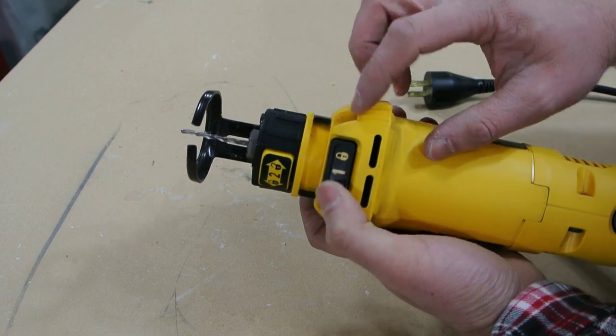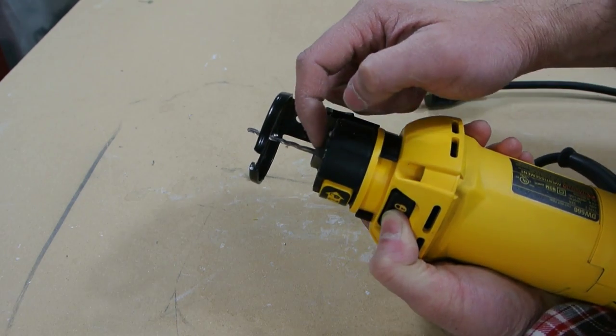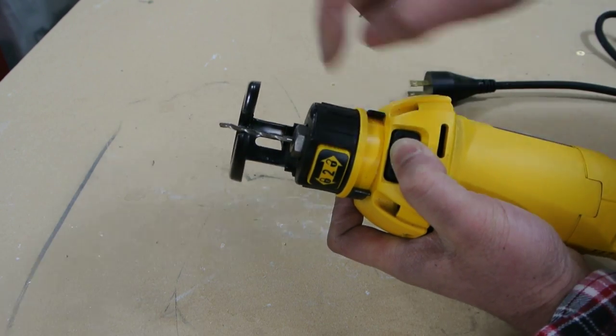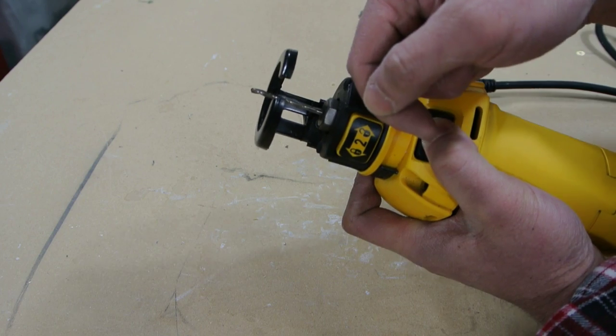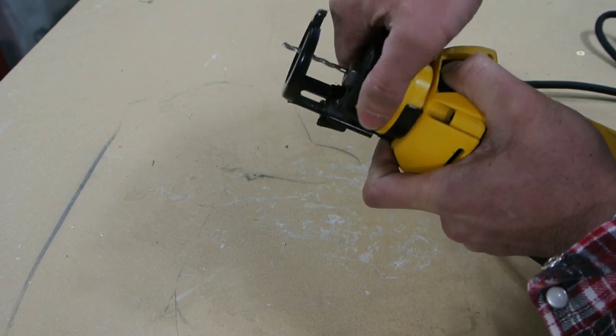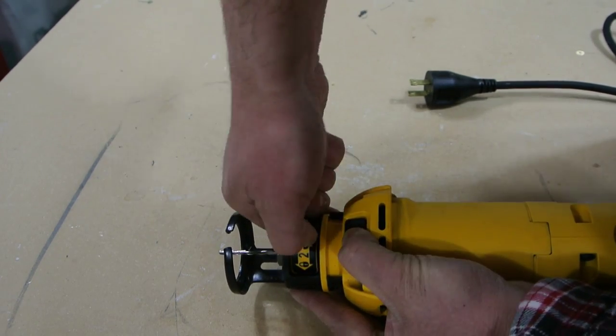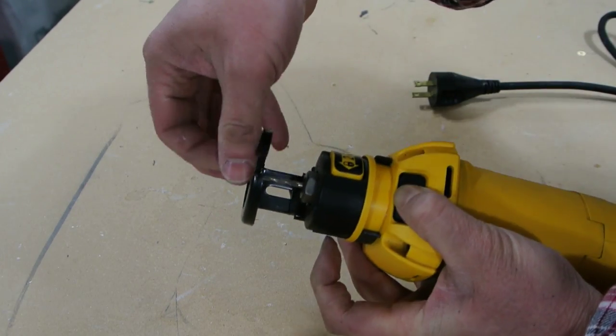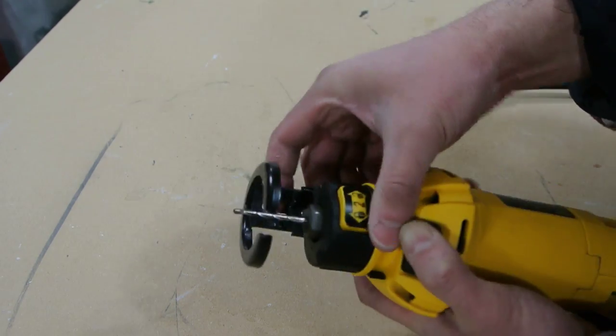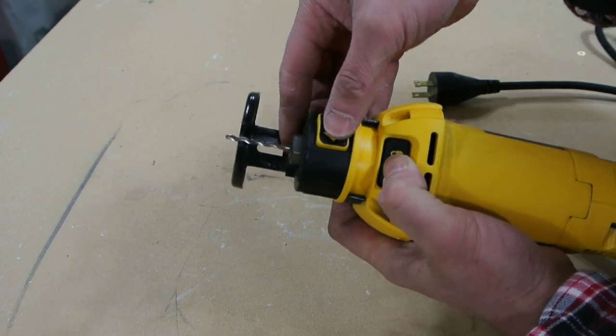To change the bits, you have this locking mechanism here. You could use a wrench on it right here on this nut, but they have this locking mechanism. If you turn to the right you unlock, turn to the left it locks. Just to show you here, the bit comes out. I had it locked in there pretty good so I had to do it twice.